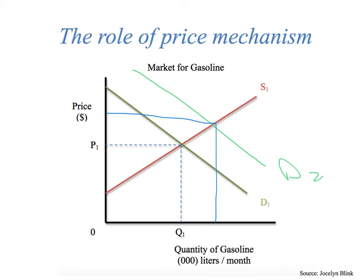And of course the opposite could be true too. If demand were to shift inward for some reason — all of a sudden people don't want to buy gasoline very much and they're moving towards electric cars — and there's an inward shift, then that would send a signal to producers: listen, we better cut the supply of this good, because the demand has shifted inward.